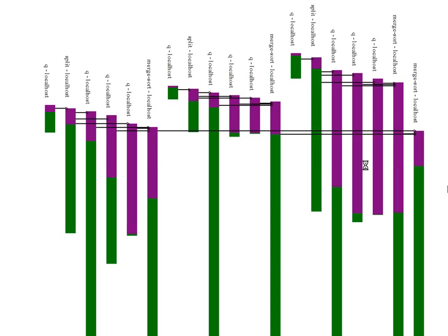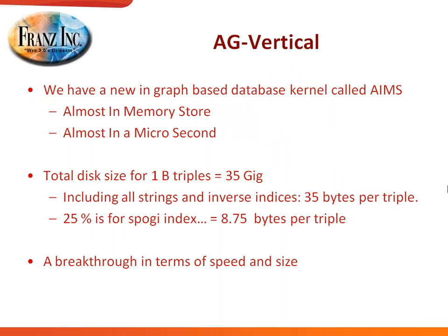This is the horizontal solution. If you want to work with it, you need professional services — it's not something we've sent out yet. But if you're interested in working with this architecture, please call us. And then we have AG Vertical, which will be the new storage layer for AllegroGraph 4.8 — available as a beta in a few months.